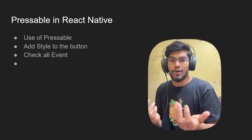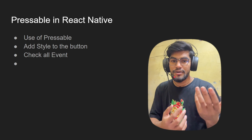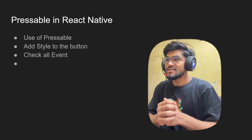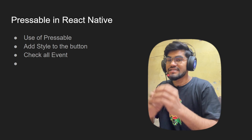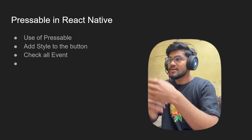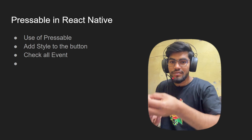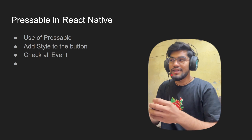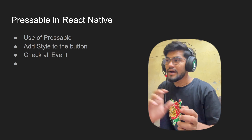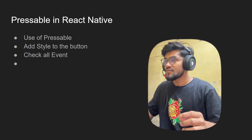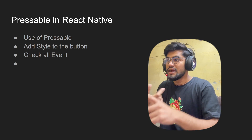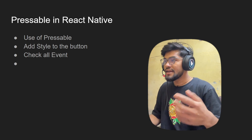This question might come up in your mind. The need for Pressable component is that, let's suppose you have a text and you want to perform actions like onPress or onLongPress — that functionality is given by the Pressable component only, not by TouchableOpacity. So we will see all the events of the Pressable component.